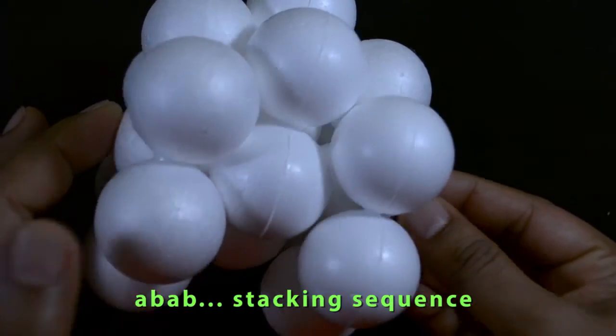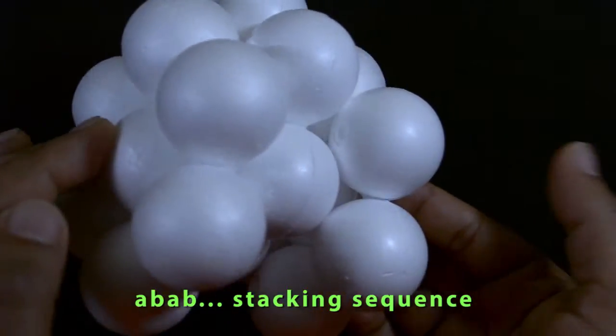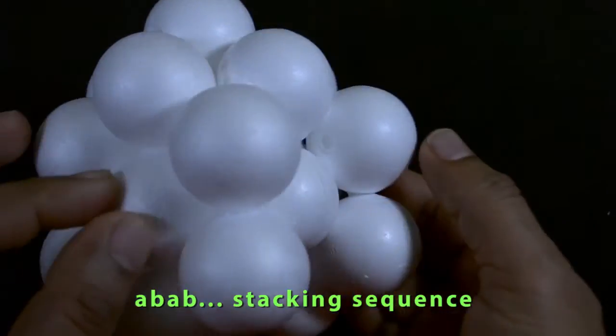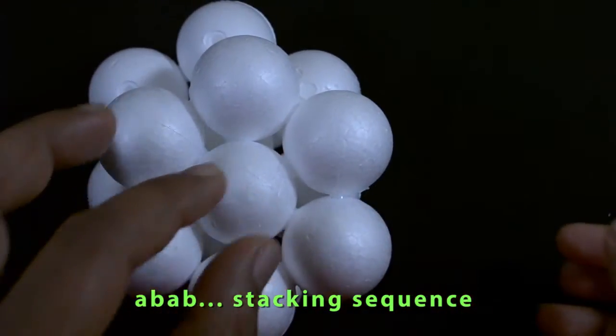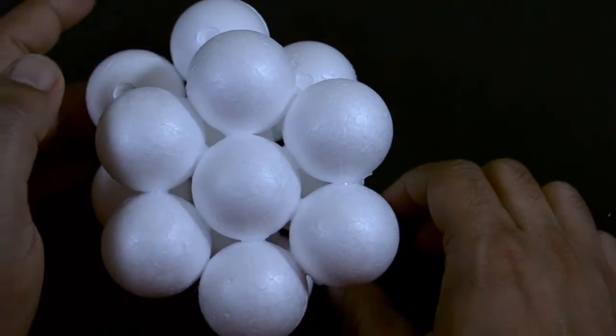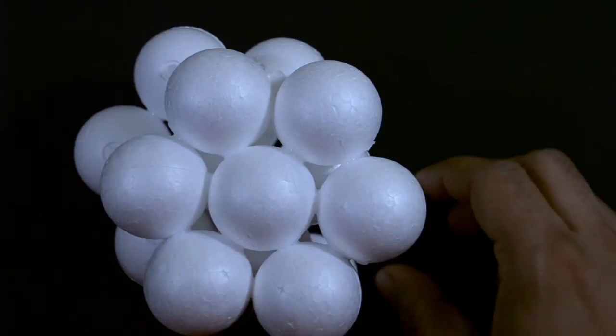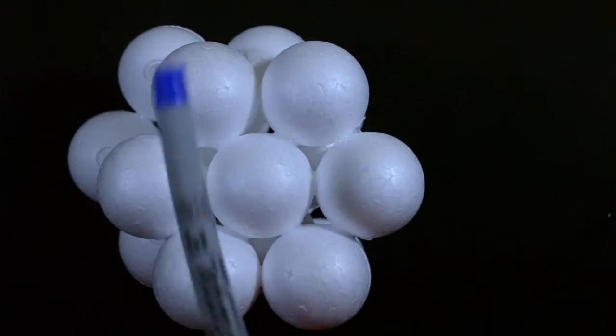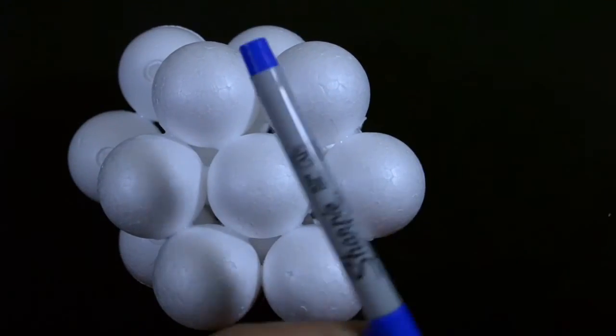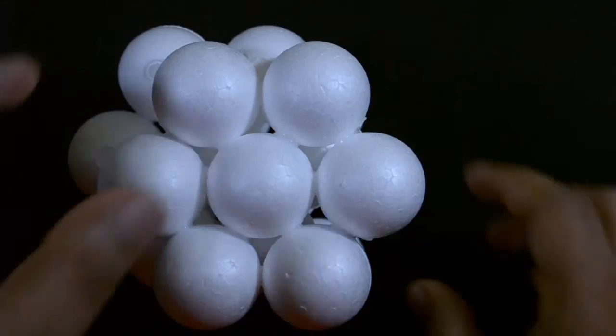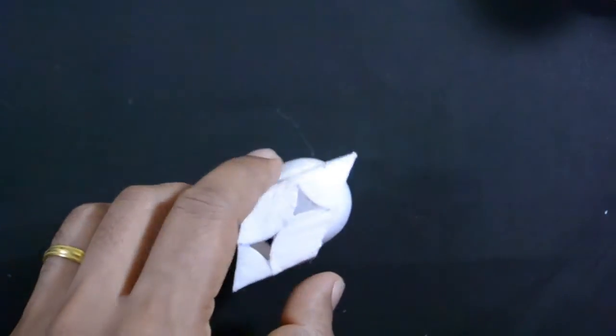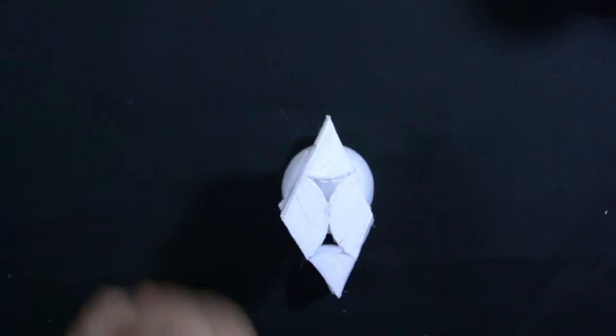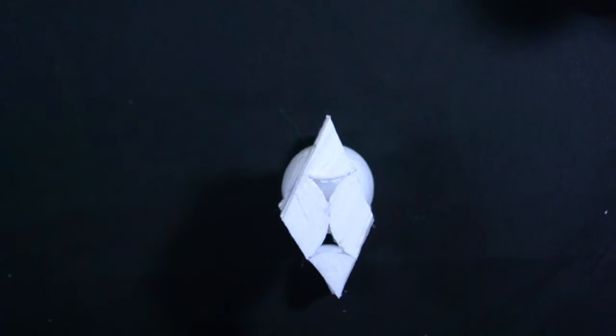Notice that every alternate plane is aligned on top of each other. If I were to slice out of here by cutting here, here, there, and there, I can get the unit cell for the hexagonal closed-packed structure.